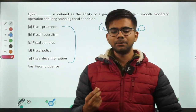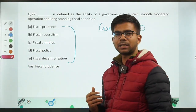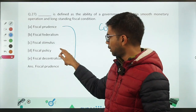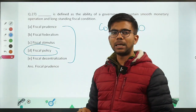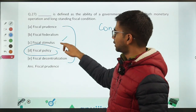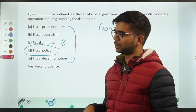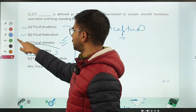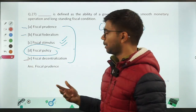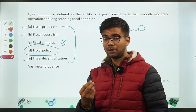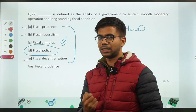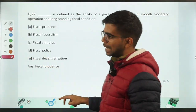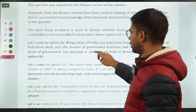Question 27 was a conceptual question from finance about fiscal terms — fiscal prudence, fiscal federalism, or fiscal decentralization. A very good quality conceptual question from the finance section of the examination.